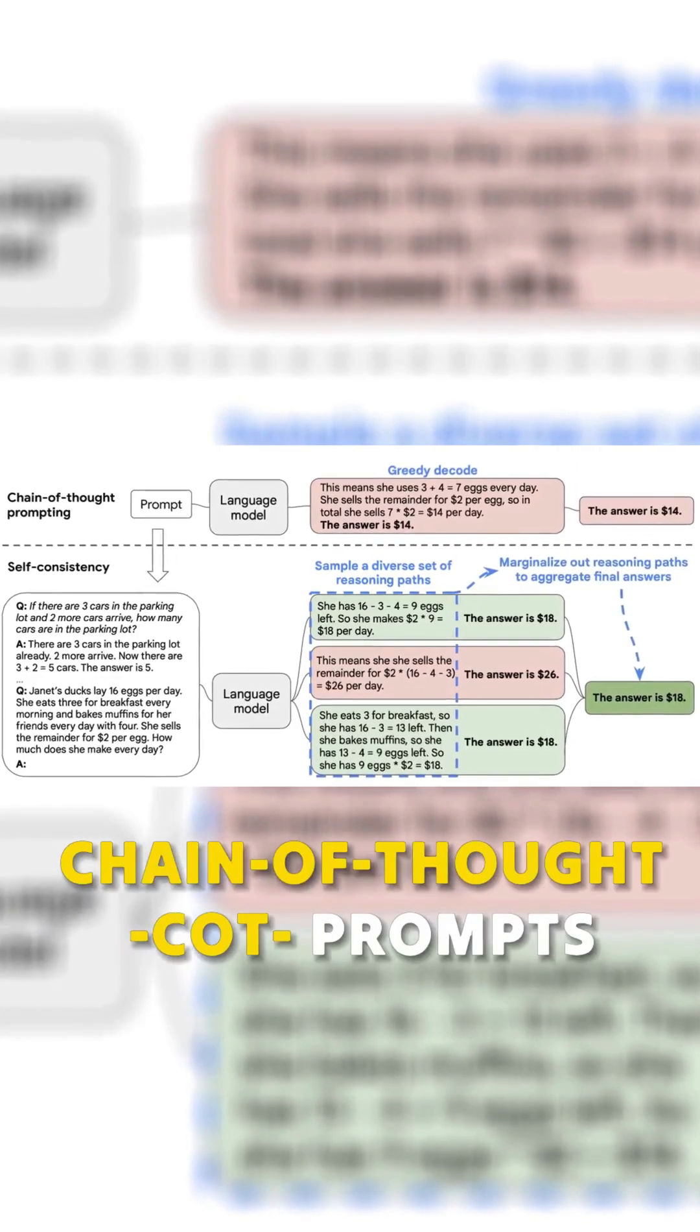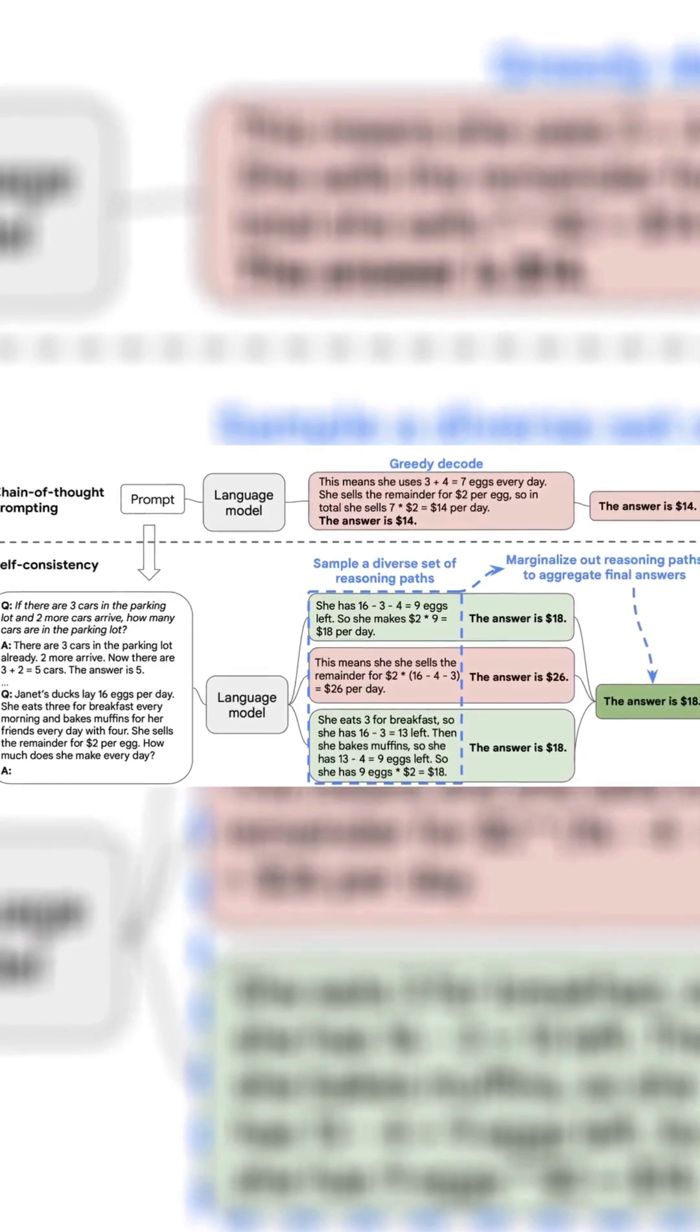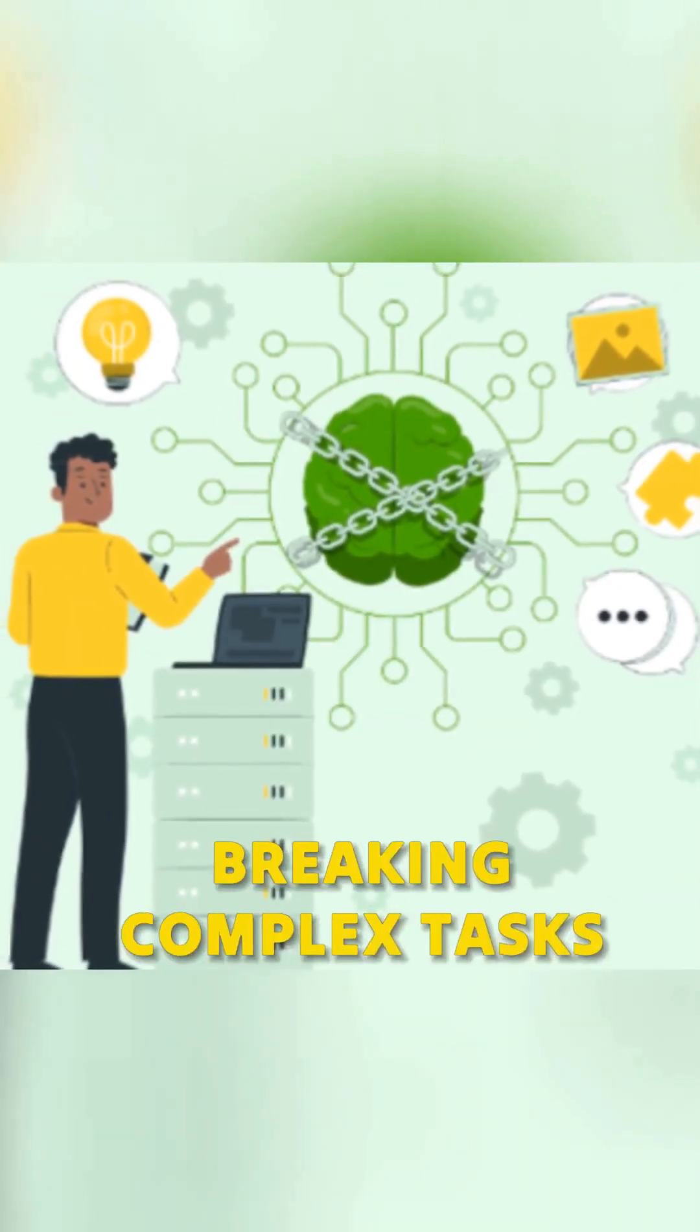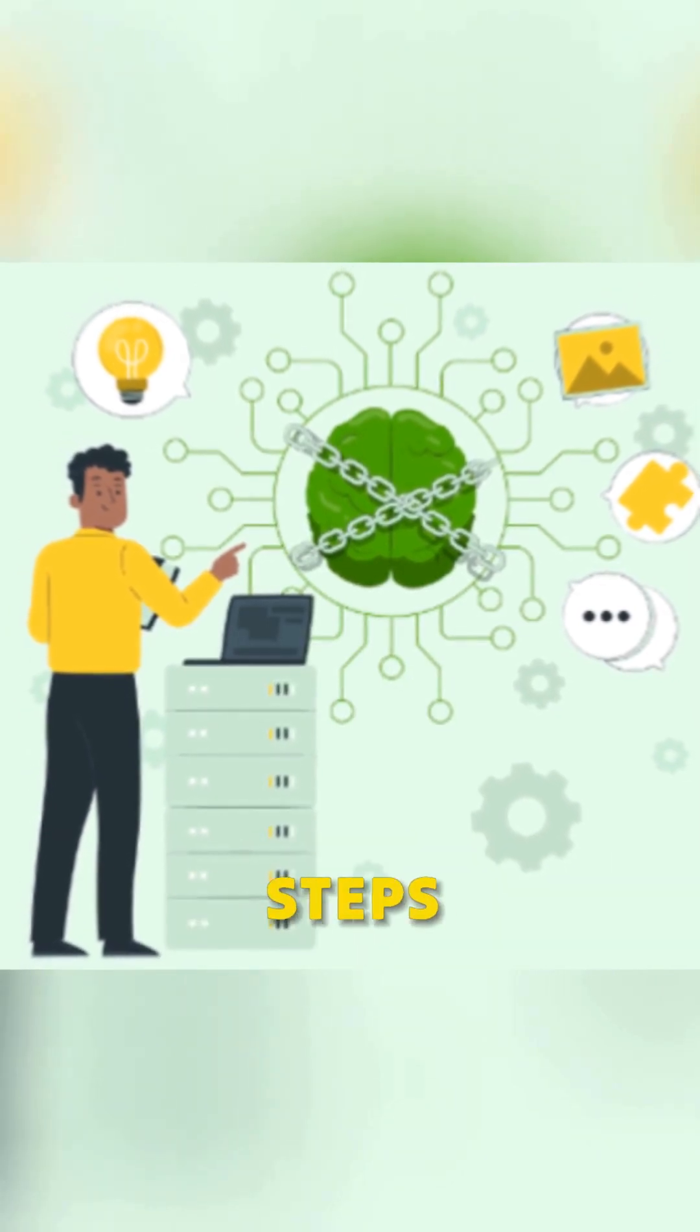Chain of Thought, or COT prompts, enhance language models' reasoning capabilities. This is achieved by breaking complex tasks into manageable steps.